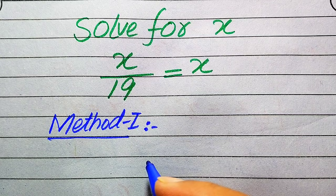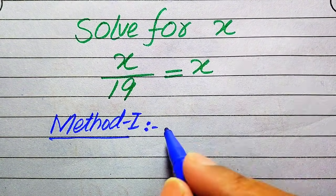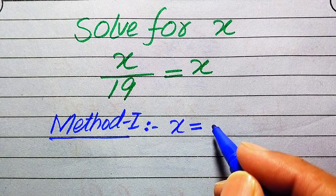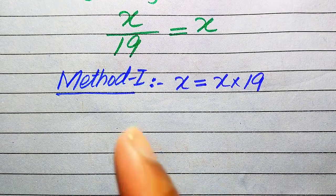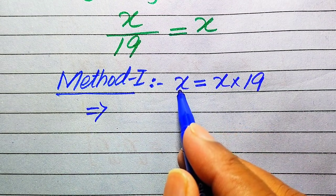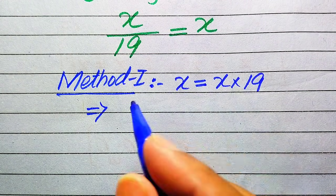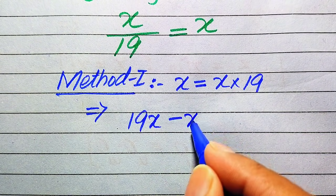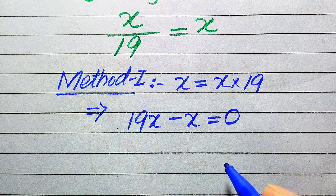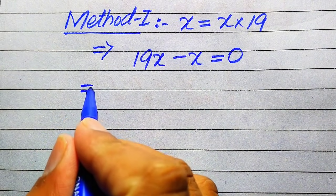In the first method, we move 19 to the right-hand side. Since it is divided by x on the left, when moved to the right it multiplies, becoming x times 19. Then we move x from the left-hand side to the right-hand side, giving us 19x, and the positive x becomes negative x, so the whole equation equals 0.